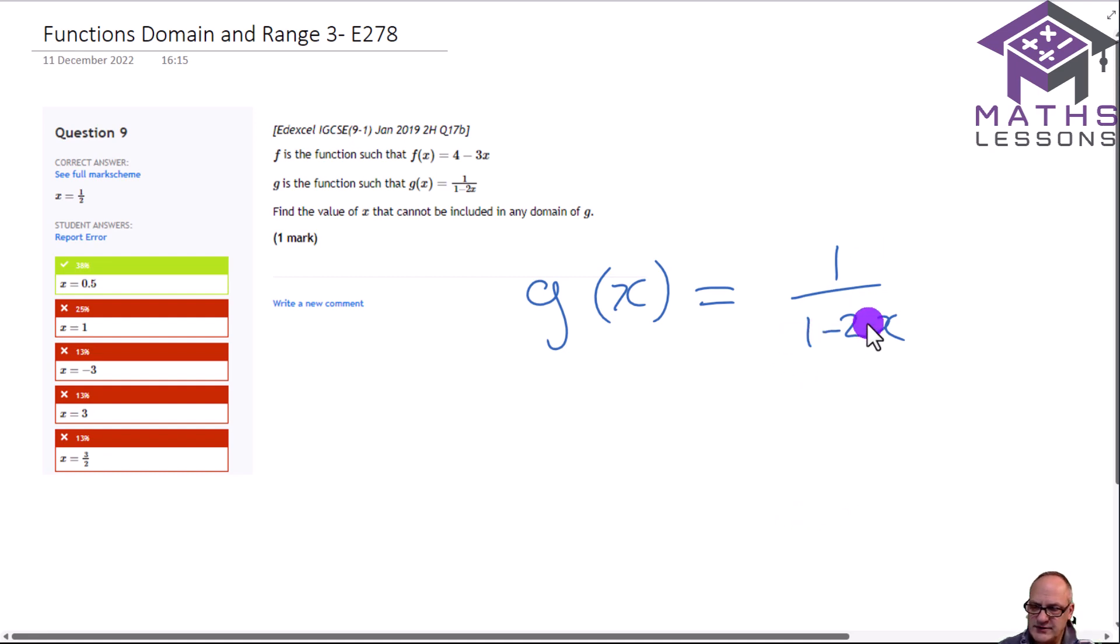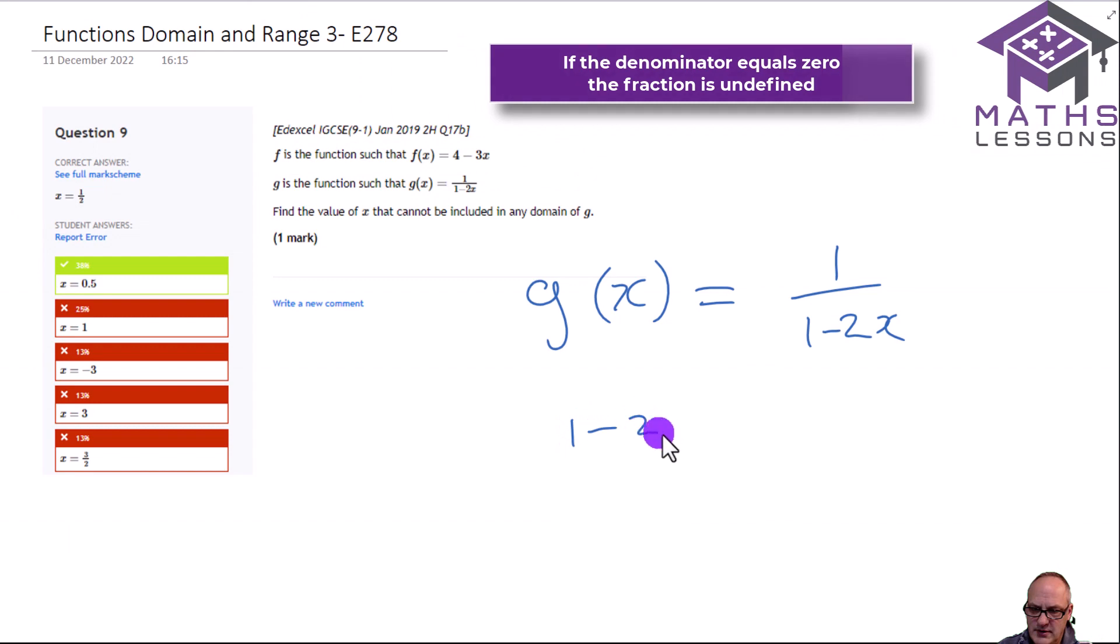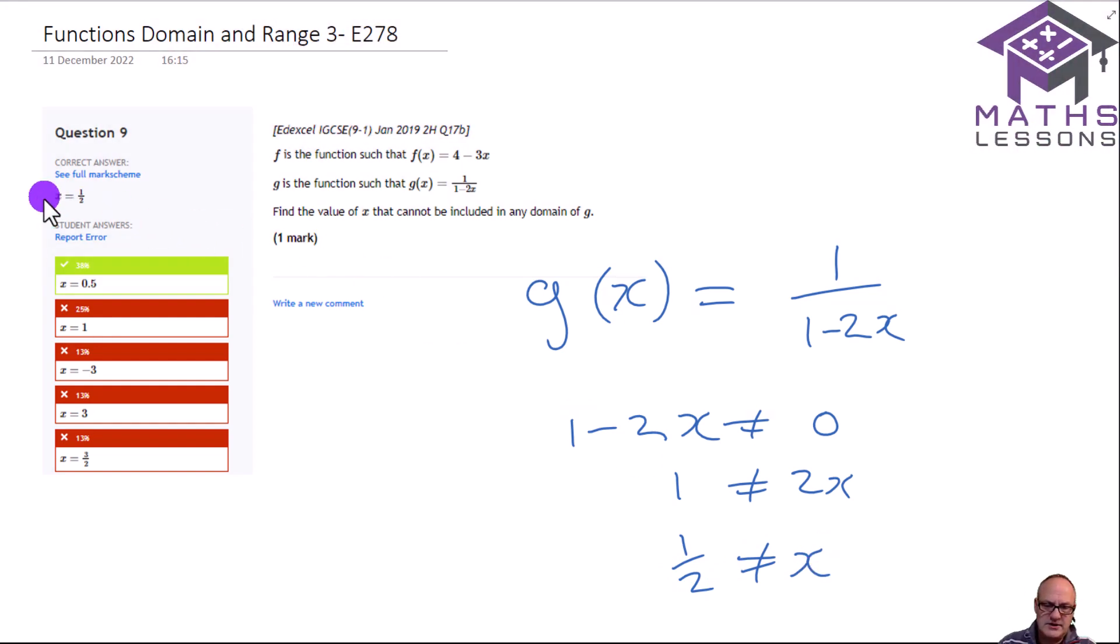So what we should realize is the denominator cannot equal 0. So therefore 1 minus 2x cannot equal 0. So therefore 1 cannot equal 2x, so therefore 1 half cannot equal x. And we can see that was our most popular answer, or 0.5.